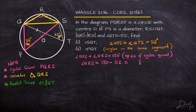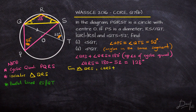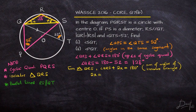Moving on to the isosceles triangle QRS: since two sides are equal, the base angles are also equal. From triangle QRS: angle QRS + 2x = 180°. We know angle QRS is 128°, so 2x = 180° − 128° = 52°, giving x = 26°. The base angles of the isosceles triangle are each 26°.